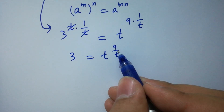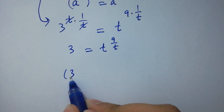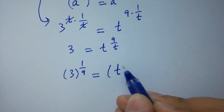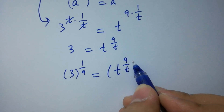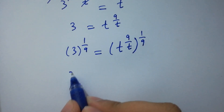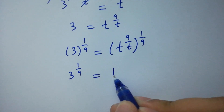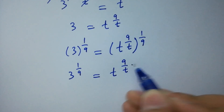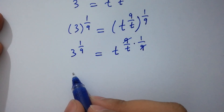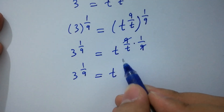To cancel this 9, take power 1 over 9 on both sides. So 3 to the power 1 over 9 equals t to the power 9 over t, to the whole power 1 over 9. This gives 3 to the power 1 over 9 equals t to the power 9 over t times 1 over 9. 9 and 9 cancel, so we have 3 to the power 1 over 9 equals t to the power 1 over t.